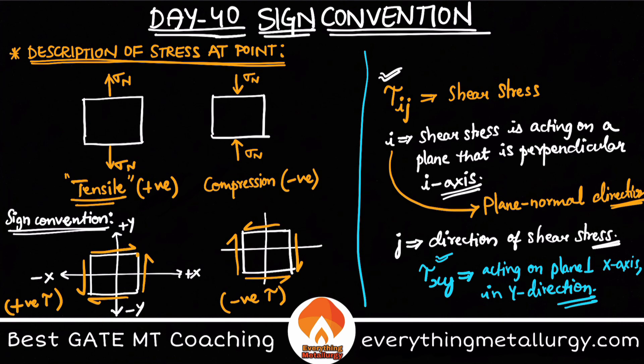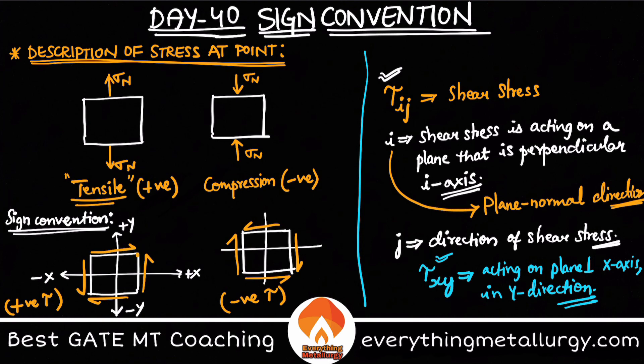So in this video we discussed three kinds of sign conventions: how to describe normal stresses as tensile or compressive, the notation of tau_ij, and how to express sign conventions for shear stresses. We also saw that the Mohr's circle construction uses a quite different convention. I hope you liked this video — please hit the like button, share it with metallurgy GATE aspirants, and check out everythingmetallurgy.com for affordable test series and video courses.